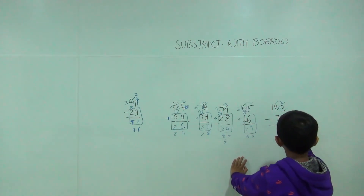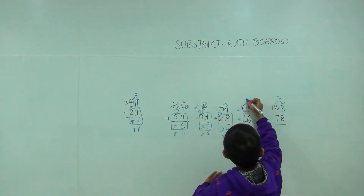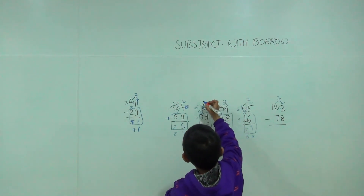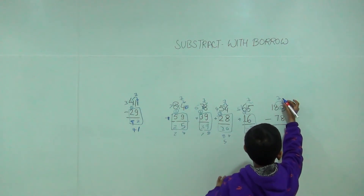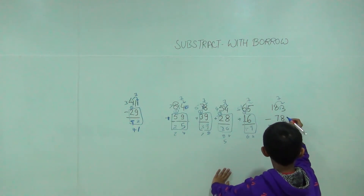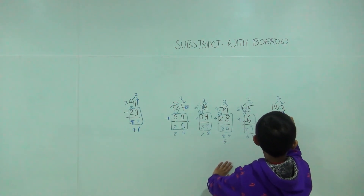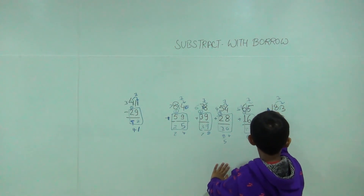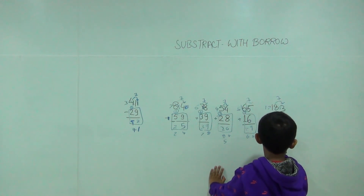13 minus 8. 13 minus 8 is equal to 5. And 18 minus 8 is equal to 5. So it will become 17. 17 minus 7 is equal to 5.